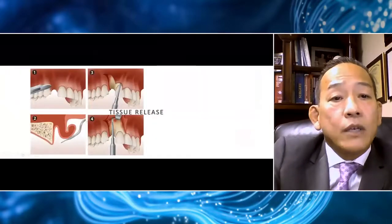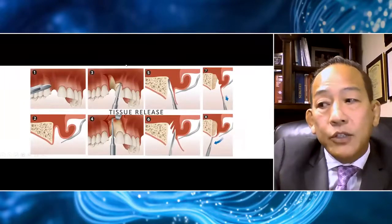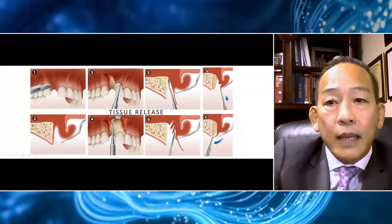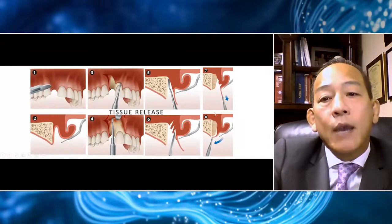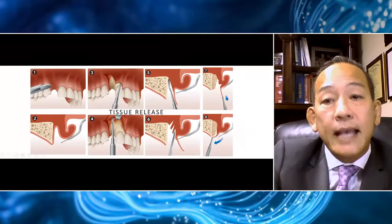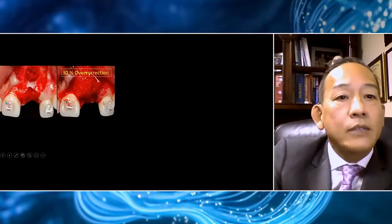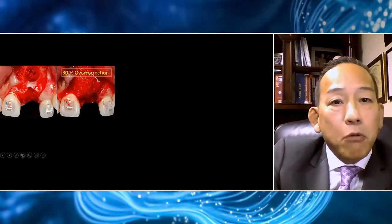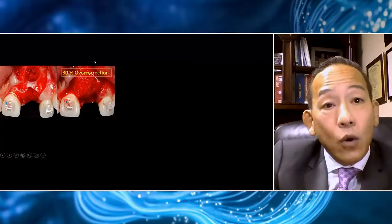From this graphic, you can see we do a subperiosteal releasing in this pouch, place our graft material, and when we close this, the graft has nowhere to go except staying exactly where we keep it. Here's our open book incision illustrated in the clinical case. You can see the graft is placed and has nowhere else to go — it cannot go apically because we placed enough graft that it is well-contained. We also overcorrect to the high crest position. Because the flap is containing our graft, it cannot migrate apically or laterally.